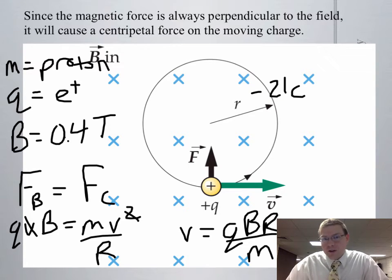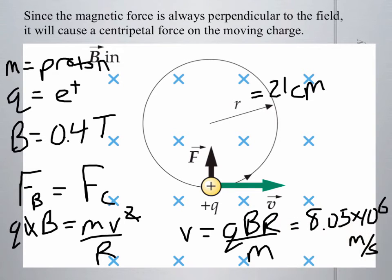And all four of those things are what I gave you at the beginning: the mass of the proton, the electron charge, the magnetic field strength, and the radius. So go ahead and work out that problem. You get about 8.05 times 10 to the 6th meters per second. So it's still legal, below the speed of light, moving very quickly.